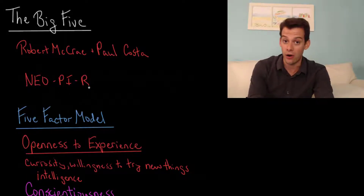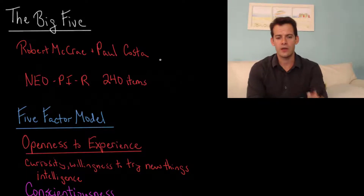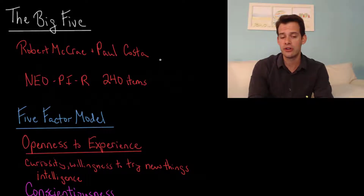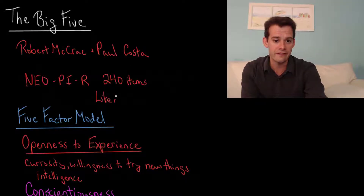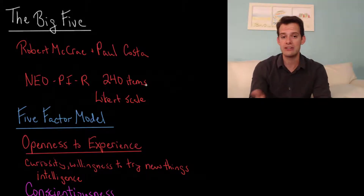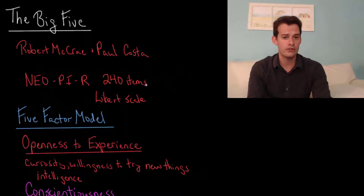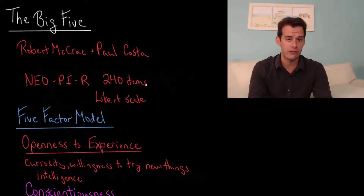The NEO PI-R consists of 240 items. A person looks at each item and responds using what's called a Likert scale — a scale with five possible responses ranging from strongly disagree, to disagree, to neutral, to agree, and then strongly agree. You look at each statement relating to personality and decide how much it matches your own personality, going through all 240 items to determine where you fall on each of the five main factors.